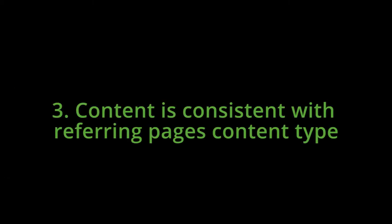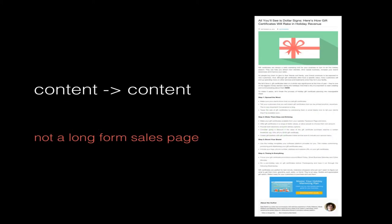And number three: content is consistent with the referring page's content type. What I mean by this is that the page on which the advert appears is similar to the advertiser's content page. This can be a bit challenging with content discovery because we don't have many targeting options — you can't always specify which domains or publisher pages your article will appear on. So you have to be a bit more generic. But as a basic principle, the content page you use as your landing page should provide value. It shouldn't be a straight sales pitch — it should be an article of some type, because the majority of publisher pages these ads appear on are article pages on newspaper or magazine websites.